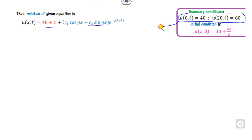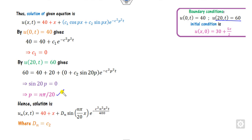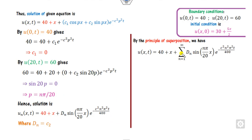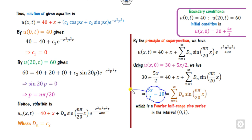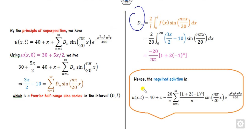Substituting u_s and applying the boundary conditions: 40 cancels out, giving c1 equals zero. Applying the second boundary condition gives p equals nπ/20. Substituting into the expression and applying the superposition principle, we write the general solution as a summation. Applying the initial condition, f(x) equals 3x/2 is a polynomial in sine form, so we use the Fourier sine series to compute d_n. Solving by parts gives d_n, and substituting back into the solution gives the required final answer.